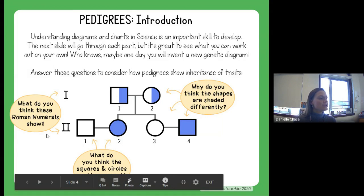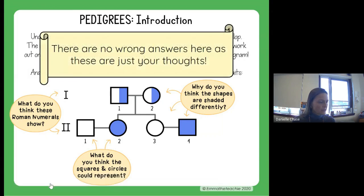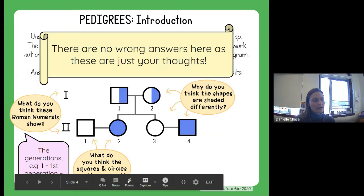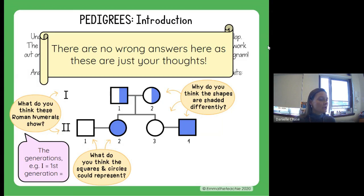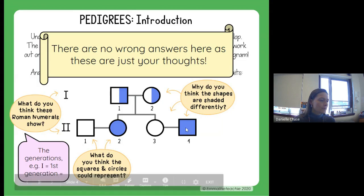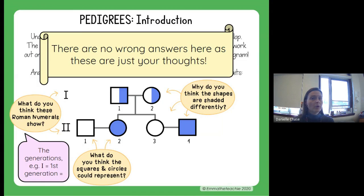The first question is: what do you think these Roman numerals are showing? You'll find them at every generation. You always start at the top with Roman numeral I, and then go down. You can go up to 15 generations or more, but you number each generation. Then you number all the individuals in the chart as well, so you know who you're talking about. You can refer to generation one, individual one, and know exactly who you're referring to.